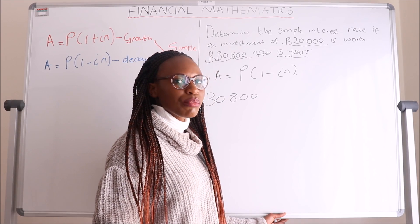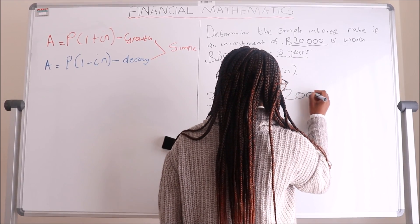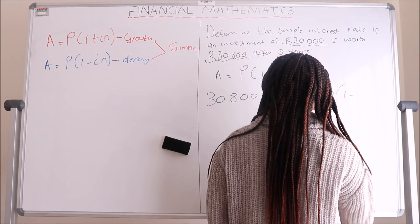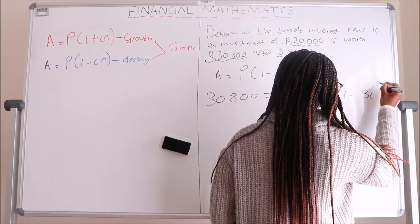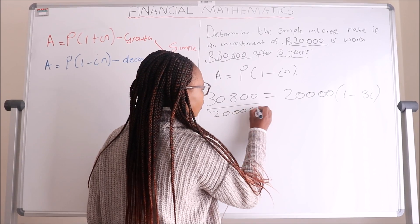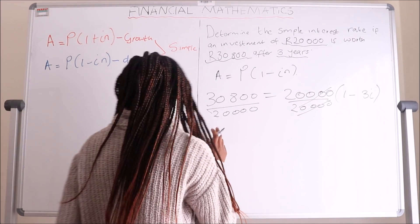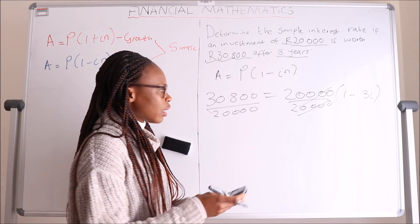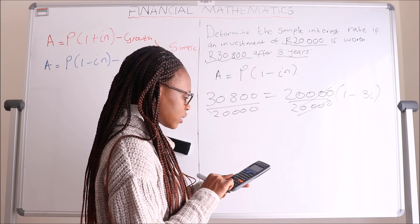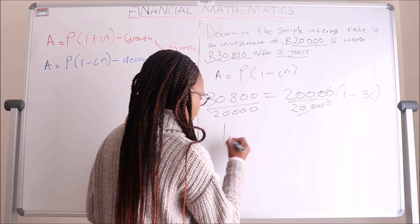So we have 30,800 equals 20,000 — which is our principal — times one plus IN, where N is three and I is what we're looking for. When you are solving financial mathematics problems, remember not to round off while still solving; it's better to round off only at the end. Dividing both sides by twenty thousand to isolate the bracket.